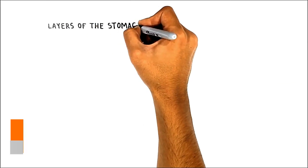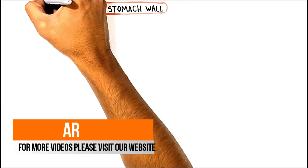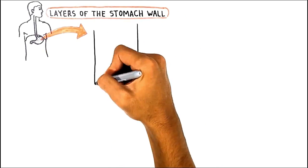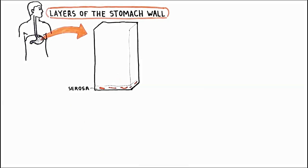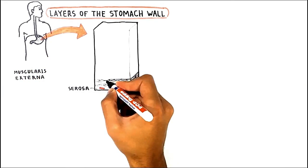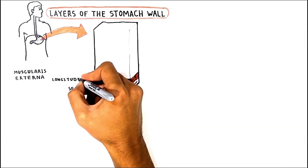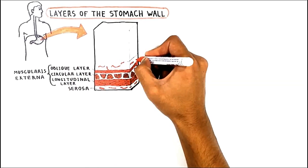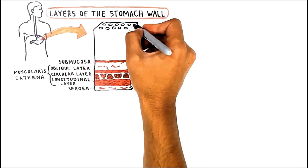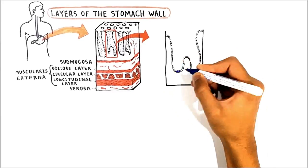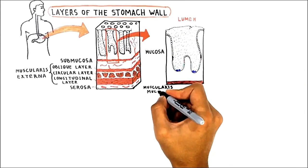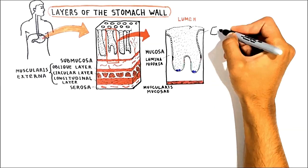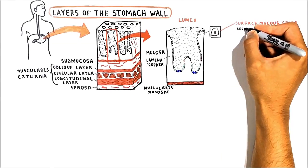Next, let's look at the layers of the stomach. The stomach wall is composed of the same basic layers as the rest of the gastrointestinal tract with certain modifications. From the outer layer inward, we have first the serosa, then the muscularis externa, which is composed of three layers: longitudinal, circular, and oblique. Then we have the submucosa, which adjoins the mucosa. The mucosa contains a muscularis mucosae and lamina propria. The surface of the mucosa is a layer of simple columnar epithelial cells called surface mucous cells, which secrete mucus.